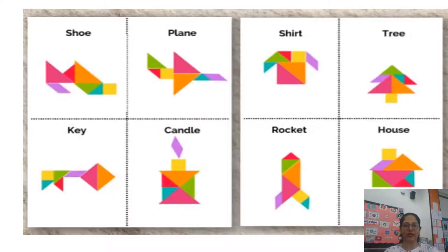So let's see what all we can create. See here these are the different things and objects that can be created: a shoe, Cinderella shoe, plane, a shirt, a Christmas tree, key, birthday candle, rocket and even a house. So many things can be created using different pieces of the tangrams called tans.